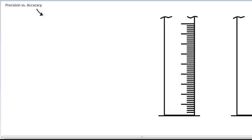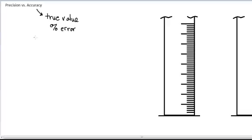Accuracy simply means how close to the true value you are. Often in the laboratory, we are judging you on your accuracy — how close to the true value or the right answer did you get based on your measurements, your calculations, etc. There are times you don't know the true value, in which case you cannot judge your accuracy. You indicate your measure of accuracy often by doing a percent error calculation. You have information about this in your lab manual.